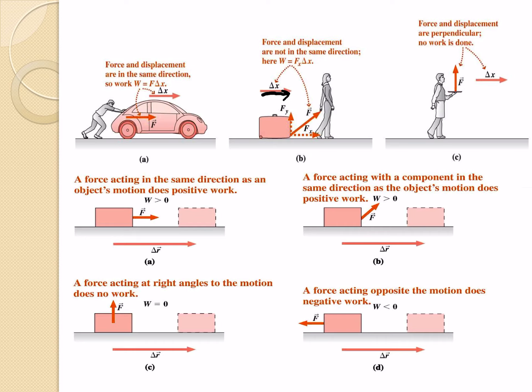In the third scenario, we can see that force and displacement are perpendicular. So in the first case where they're in the same direction, work is positive. Where they're in the opposite direction, work is negative. And in this particular case, where they're perpendicular, work is zero.